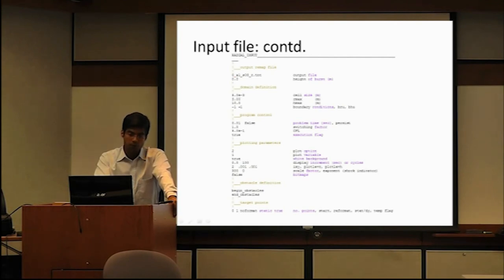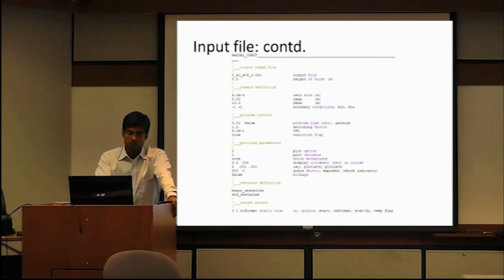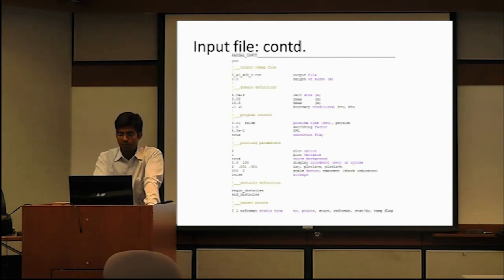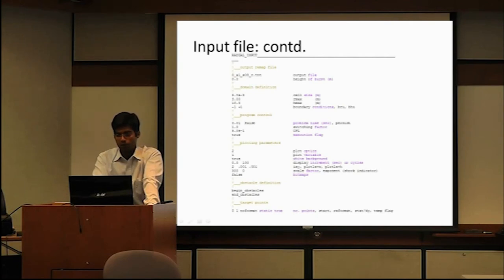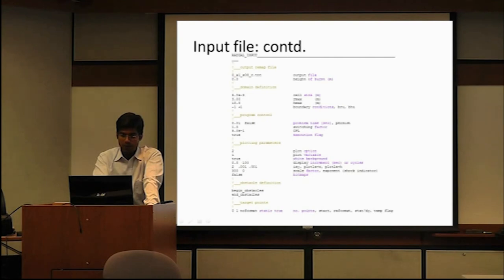Execution flag is 'true' because you want to run this analysis. Plot option 2 means it will plot contours rather than XY curves. Plot variable 1 corresponds to pressure — it draws contours of the pressure history. You can choose white background if presenting in a report. Display increment starts at time 0.0 and displays after every 100 cycles. If you use plot option 2, the IX/IY settings don't matter.